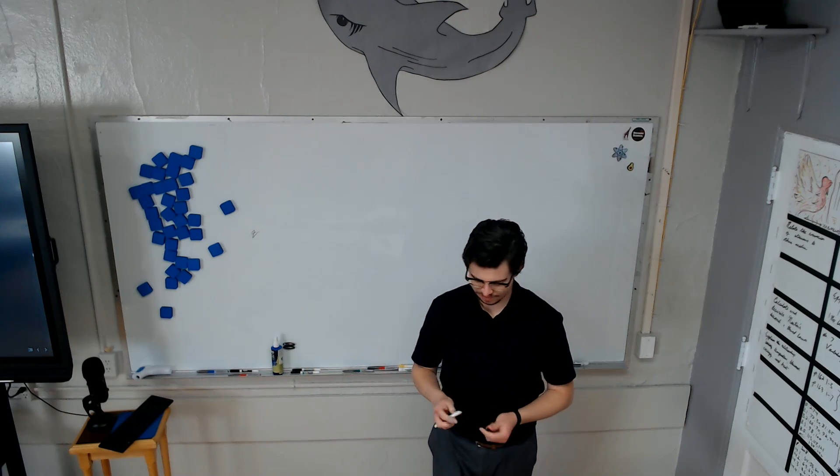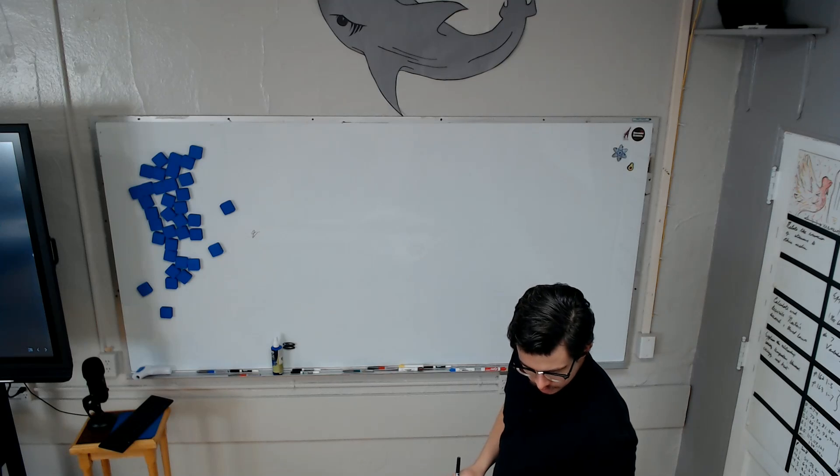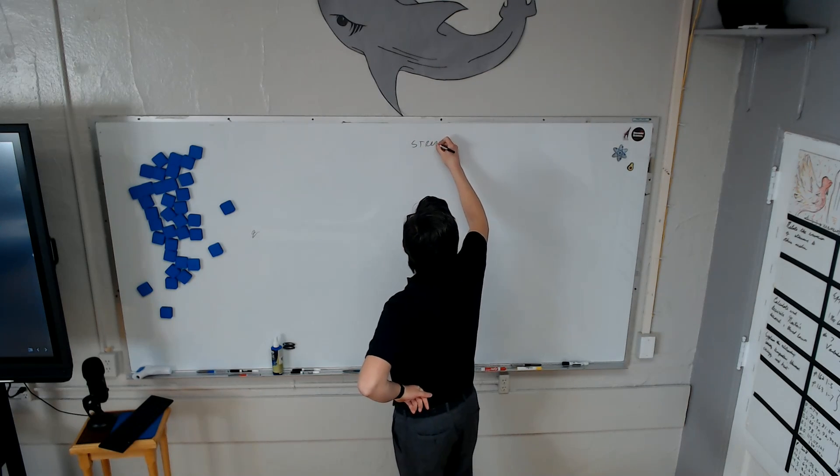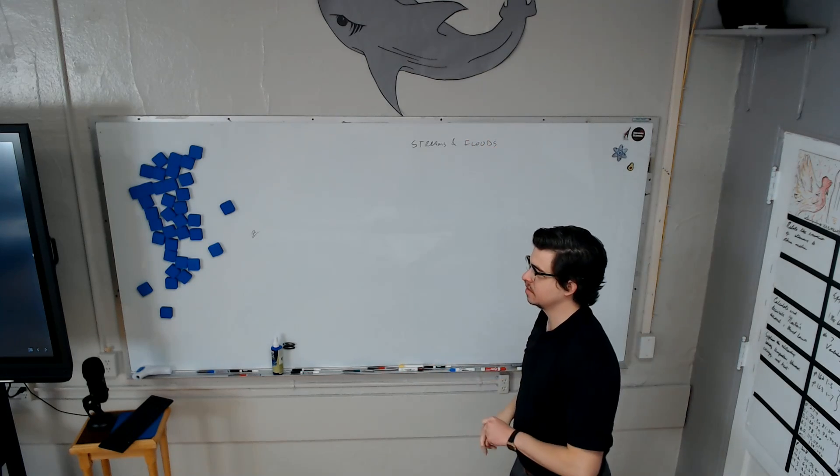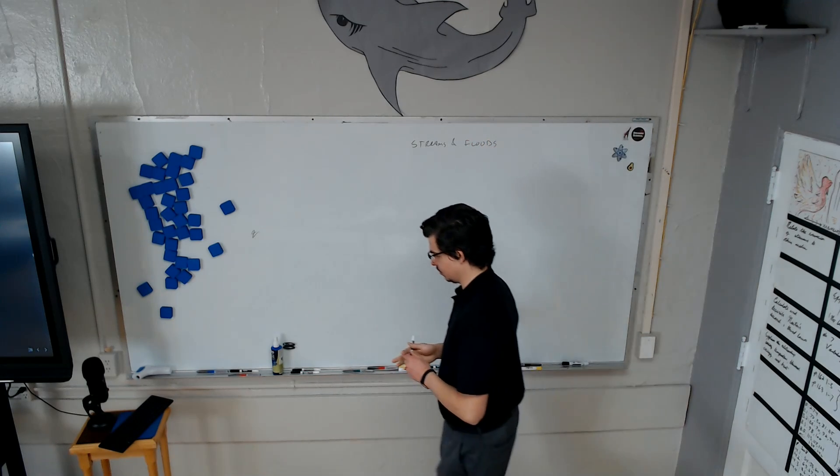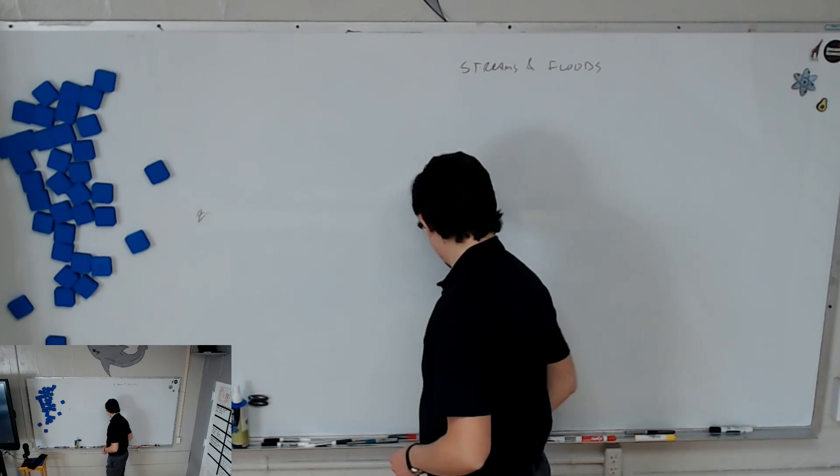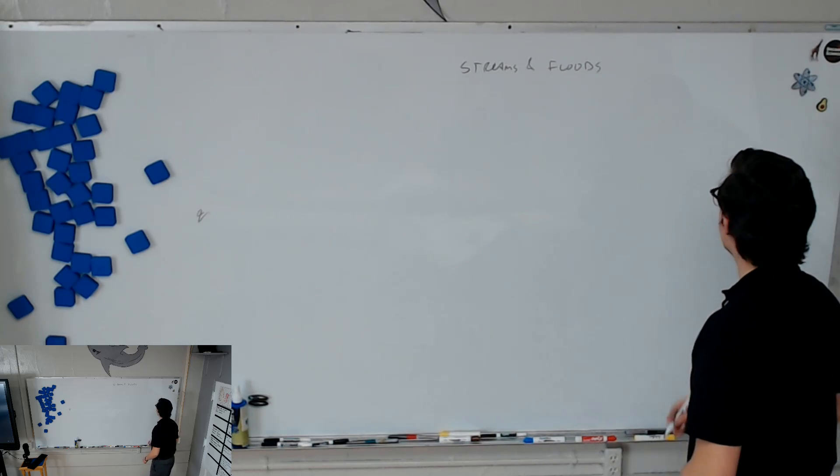Earth science time. Today we're going to talk about, what should we call it? Streams and floods. Is that too thin, do you think? That's too thin. I think so too, Natalie. Oh, that made it better. Let's use the fat part here. Okay, streams and floods.